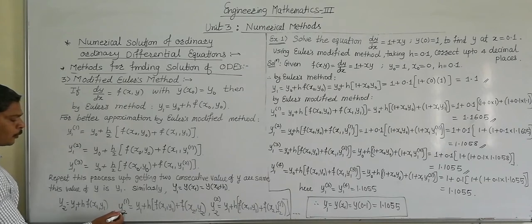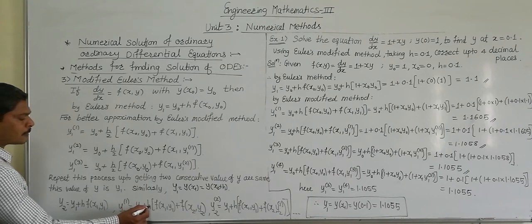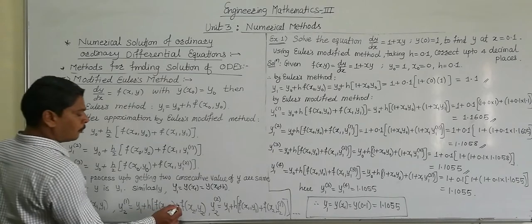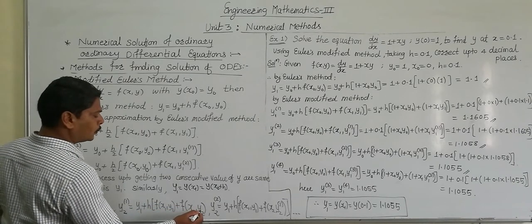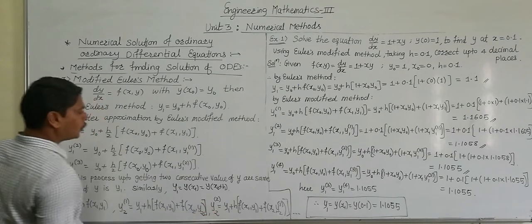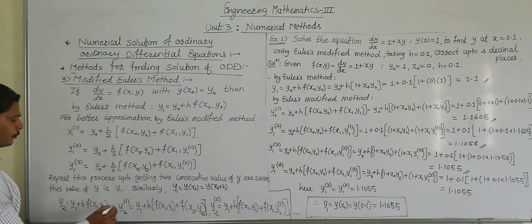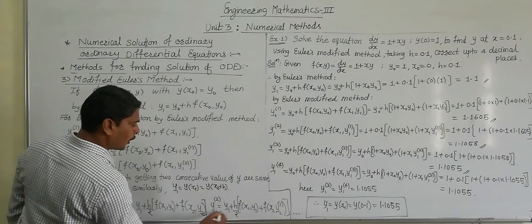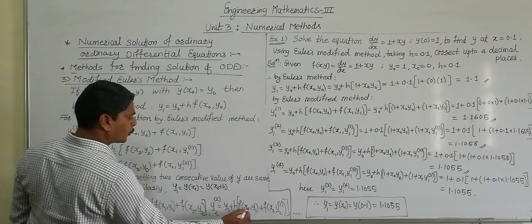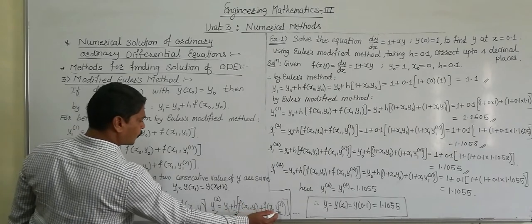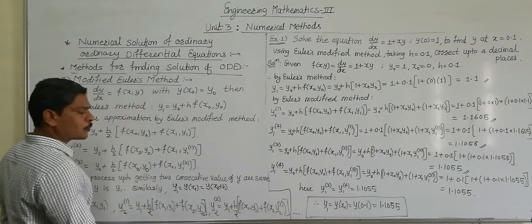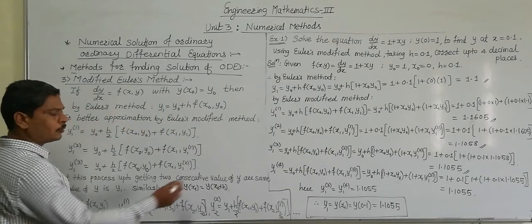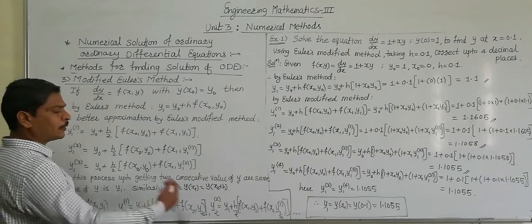The first iteration for y2 becomes y2 raised to 1, equal to y1 plus h upon 2 into f of x1 comma y1 plus f of x2 comma y2. Then y2 raised to 2 becomes y1 plus h upon 2 into f of x1 comma y1 plus f of x2 comma y2 raised to 1. We continue until two consecutive values are the same.